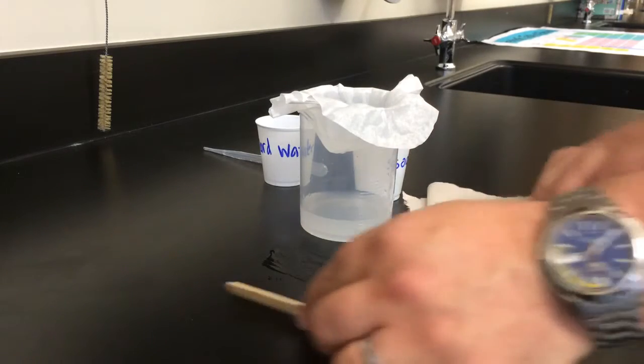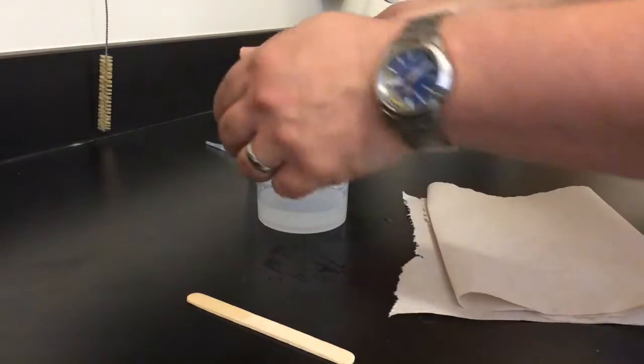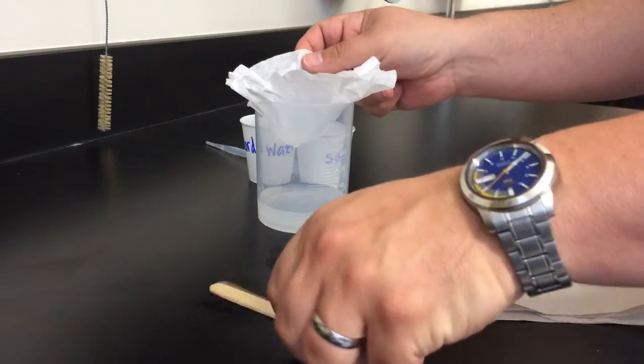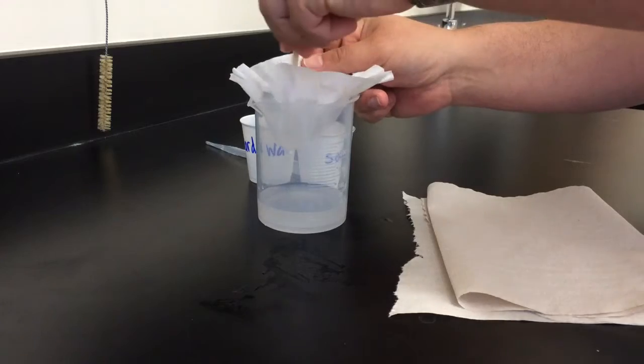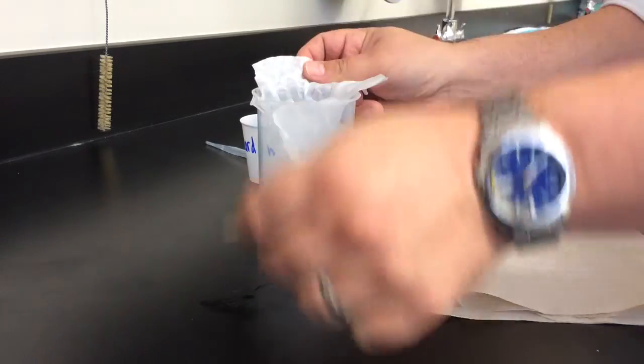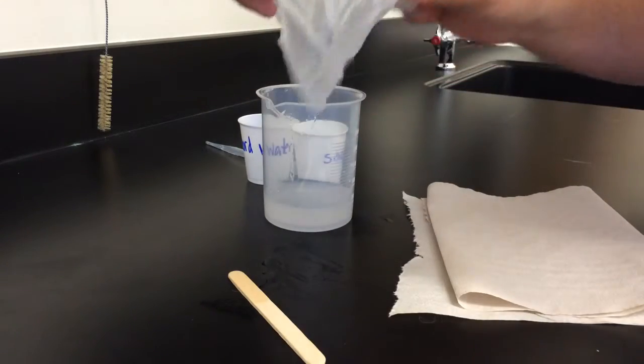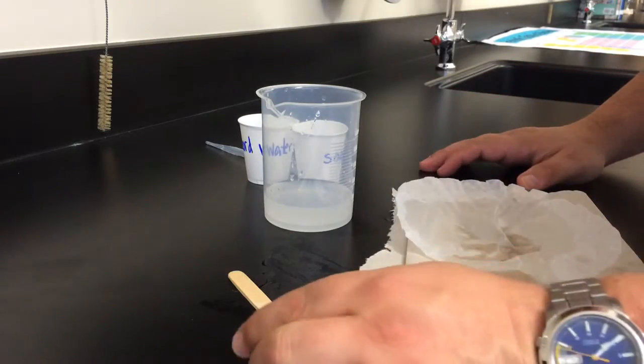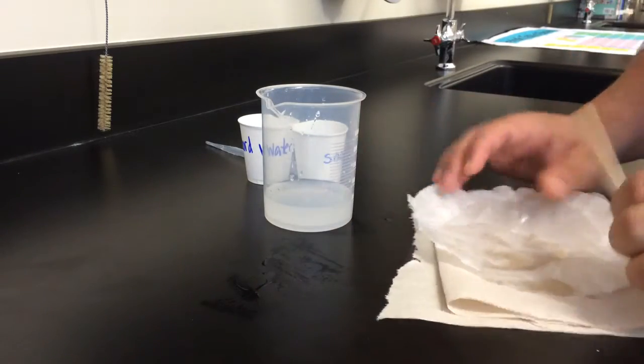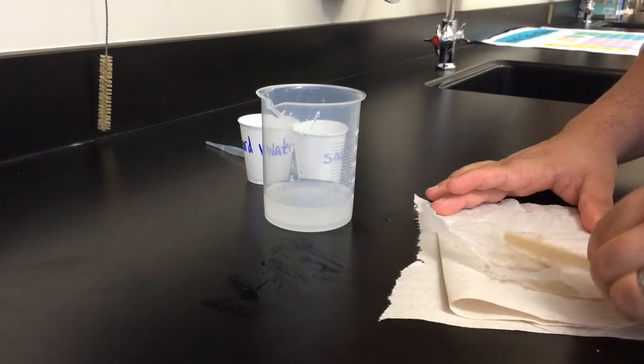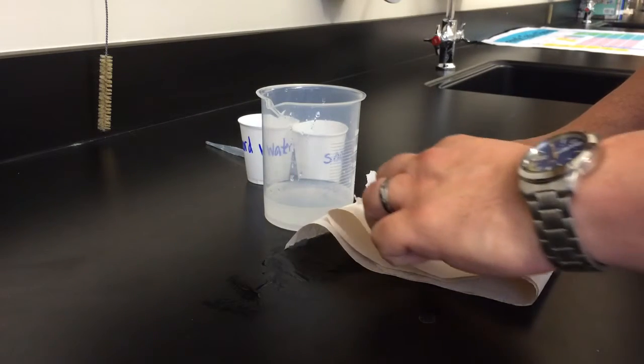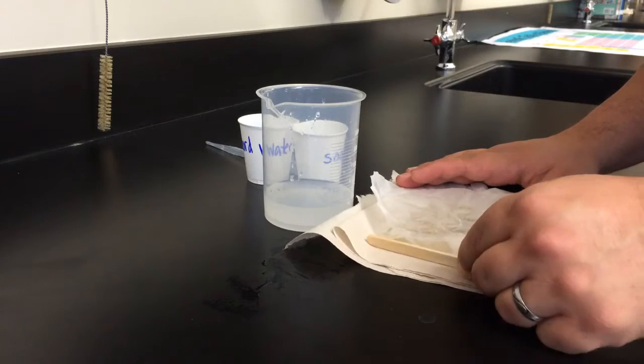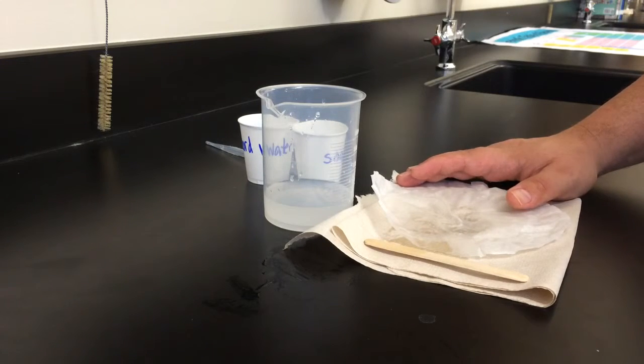And then the last step, once I've got it pretty much water free, as dry as I can make it, is to lay the coffee filter out and start to let it dry but gently scraping it with the popsicle stick and I'll bring together a little bit of white stuff and that's my soap scum.